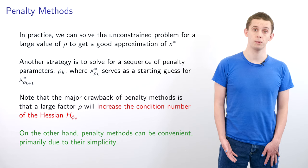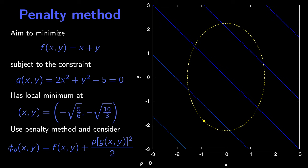Let's now take a look at a Python example that demonstrates some of these ideas. We'll use an example first introduced in the Lagrange multiplier section: minimize f(x, y) = x + y subject to the constraint g(x, y) = 2x² + y² - 5 = 0. In the plot, the blue lines correspond to contours of f and the dotted yellow ellipse corresponds to the feasible set S where g equals zero. Using Lagrange multipliers we can verify that f has a local minimum on S at (-√(5/6), -√(10/3)), shown by the small yellow dot.